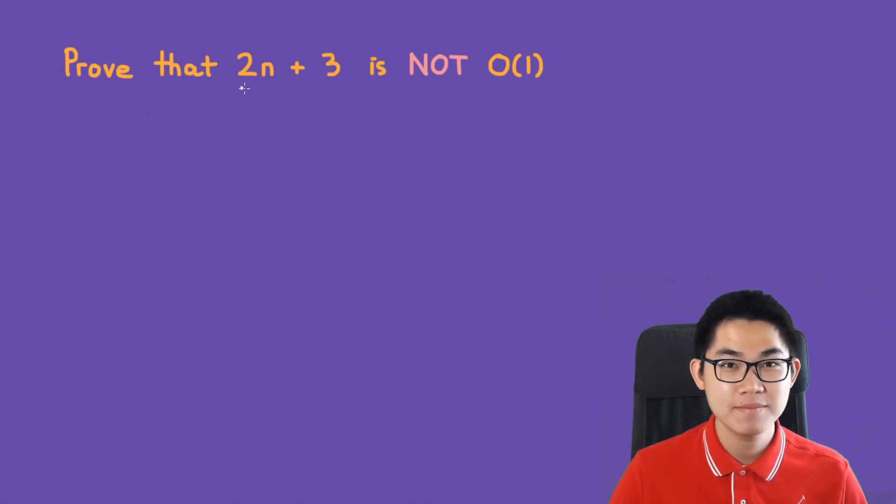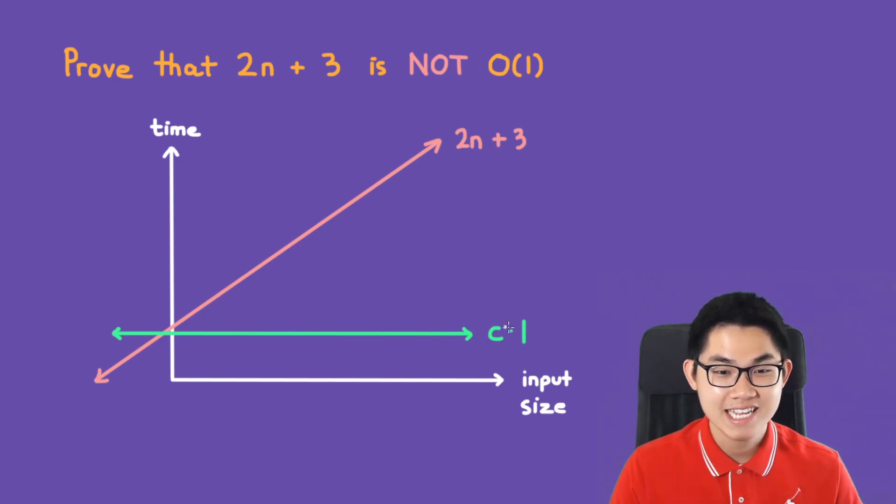Prove that 2n plus 3 is not O(1). Intuitively, this is what O(1) looks like. So this is c times 1 and it's always under our red function. So let's go ahead and increase the c and see what happens.